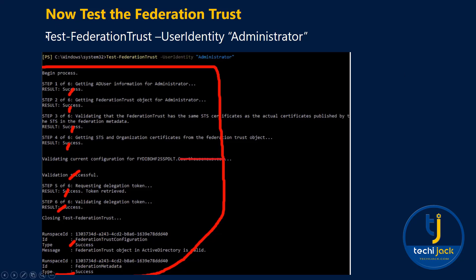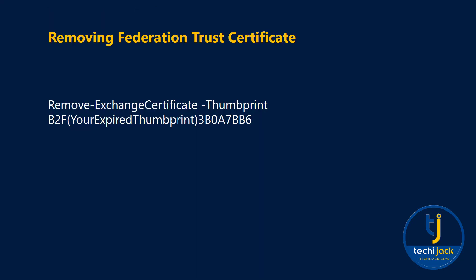To test the federation trust, run the commandlet Test-FederationTrust with a user identity as an administrator — running it without an identity may produce errors. You can see the command being processed: all steps show success, including validation success and delegation token success. If you see everything as success, that means you have fixed the problem and it will work.